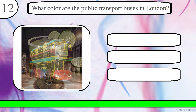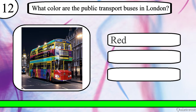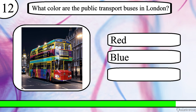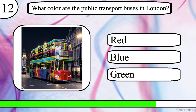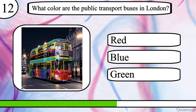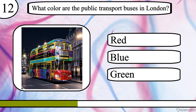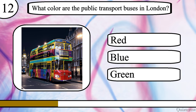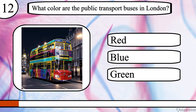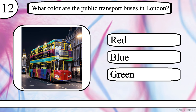Question 12. What colour are the public transport buses in London? Red, blue or green? The correct answer is red.